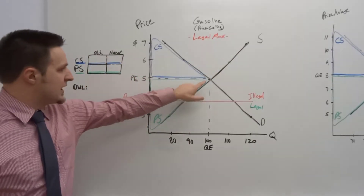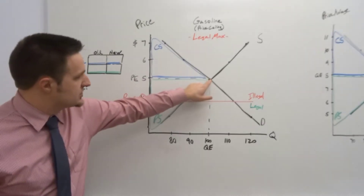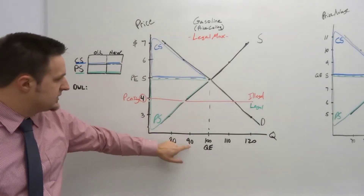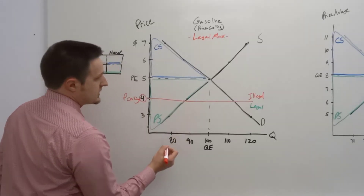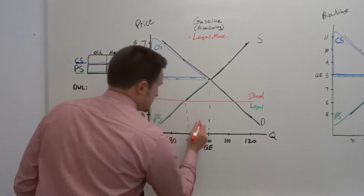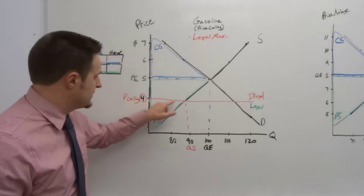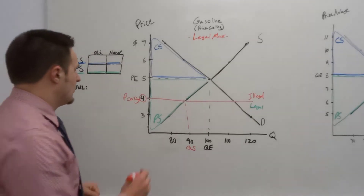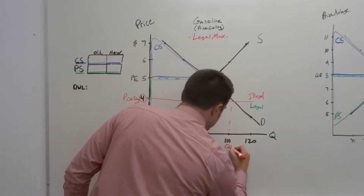At the lower price, when we drop from $5 to $4, we reduce the quantity supplied from 100 down to 90 units. Follow that price and see where it intersects with the supply curve — that gives the quantity supplied, which is 90. Where does the price intersect with the demand curve? That is at the quantity of 110.